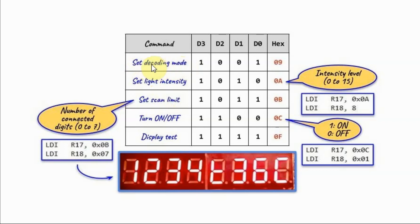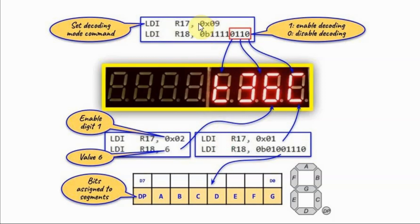We could also set the decoding mode by sending the corresponding command byte, which means that the data value we send — a decimal value — will be decoded automatically by the IC and displayed on the 7-segment screen. As an example, this command byte will set the decoding mode. The second data byte determines whether decoding is enabled or disabled for each digit: 0 means disabled, 1 means enabled. So if we want to display the value 6 on digit 1, first the decoding should be enabled, then we enable the digit, and then we send the value.